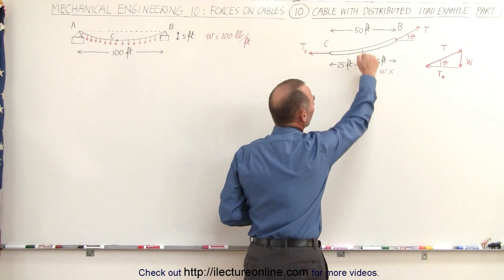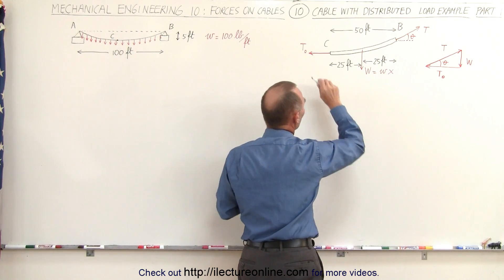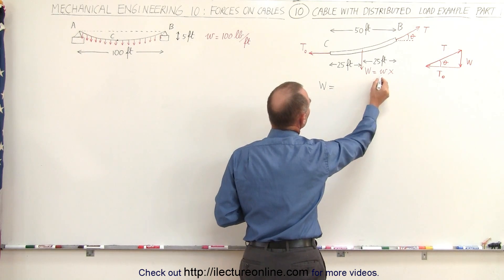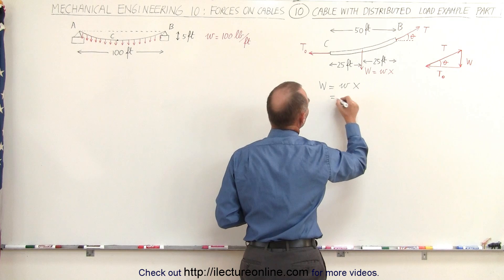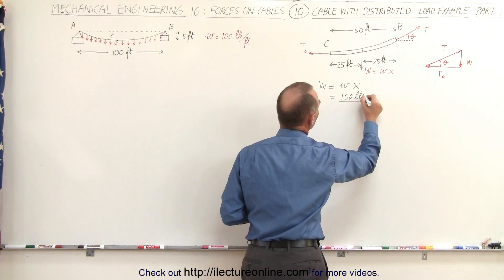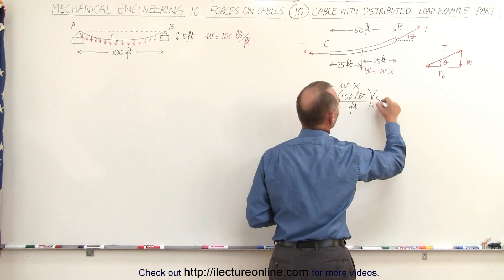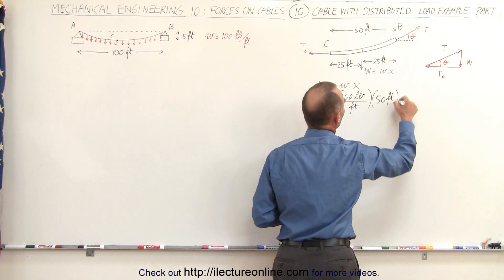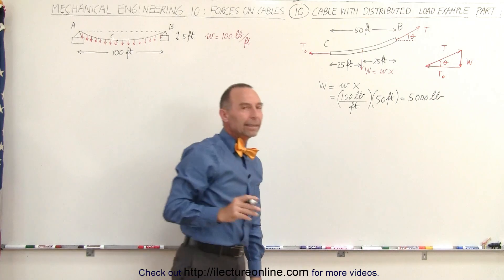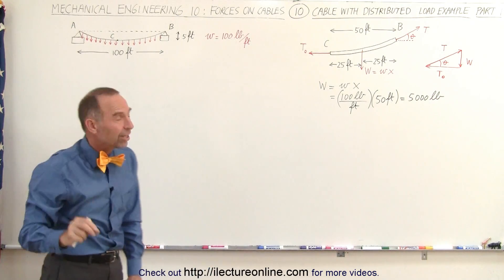First we calculate the total force pulling down on the cable due to the load. The total weight equals the weight per unit length times the length — that's 100 pounds per foot multiplied by the 50-foot section — giving a total load of 5,000 pounds.